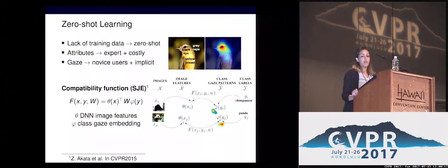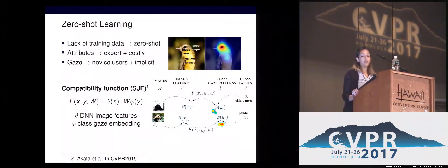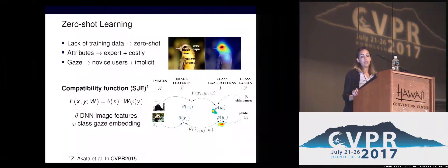Lack of labeled training data, namely zero-shot learning, is challenging. Approaches use object discriminative attributes which are annotated by experts. It's a costly process, especially for fine-grained collections where visually objects are very similar.